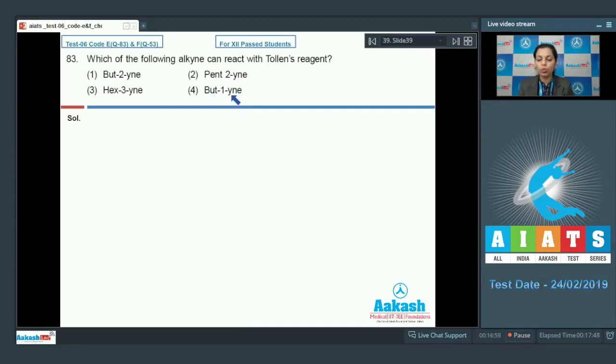It means in this case but-1-yne is the terminal alkyne and that's why it has the nature to react with Tollens reagent. That's why I'll choose option 4 as the correct answer.